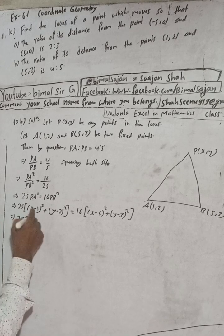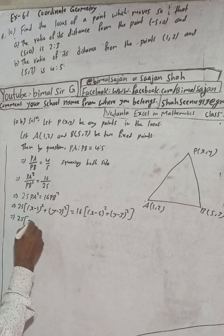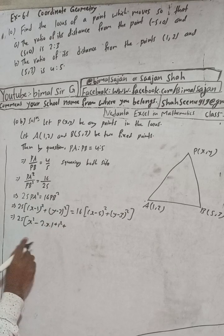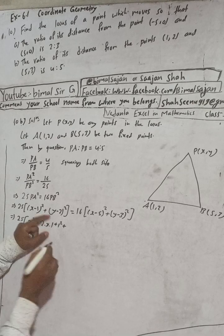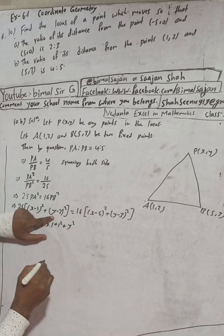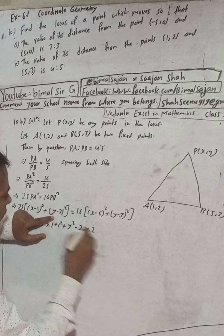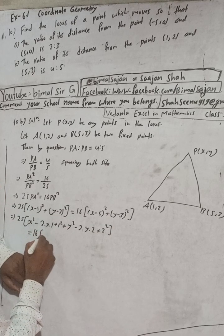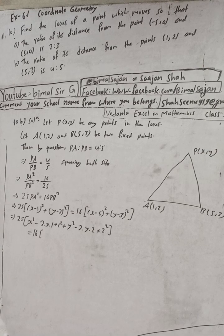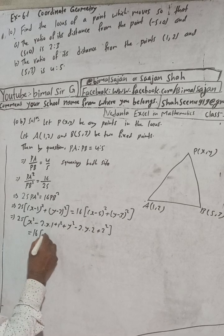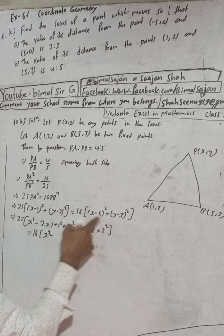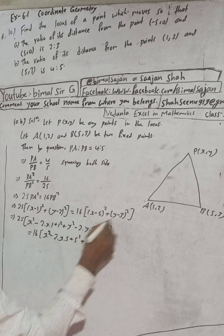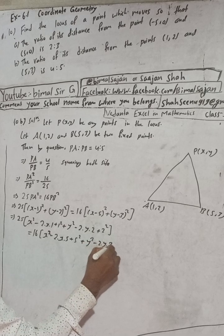Expanding this: 25[x² - 2x + 1 + y² - 4y + 4] = 16[x² - 10x + 25 + y² - 6y + 9].